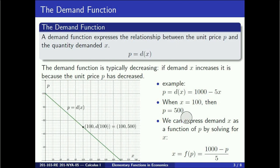Finally, it is also possible to solve p equals d(x) for x in order to express the demand as a function of the unit price. With our example, solving p equals 1000 minus 5x for x gives that x is equal to 1000 minus p divided by 5. We could then say that the units sold x is some function of the unit price f(p).